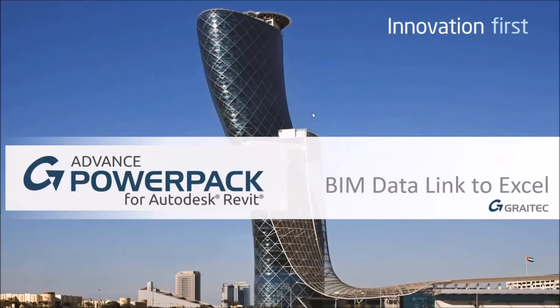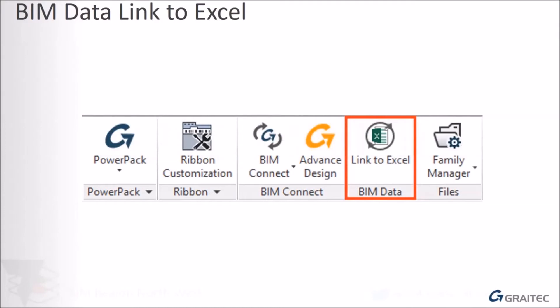Good morning and welcome to the first in our series of webinars on the Advanced Power Pack for Revit. Today we're looking at the Link to Excel tool, which is absolutely brilliant. It allows us to not only export a schedule out to Excel, but to have bi-directional connectivity — meaning we can change information in the Excel spreadsheet and propagate that information back into the Revit model.